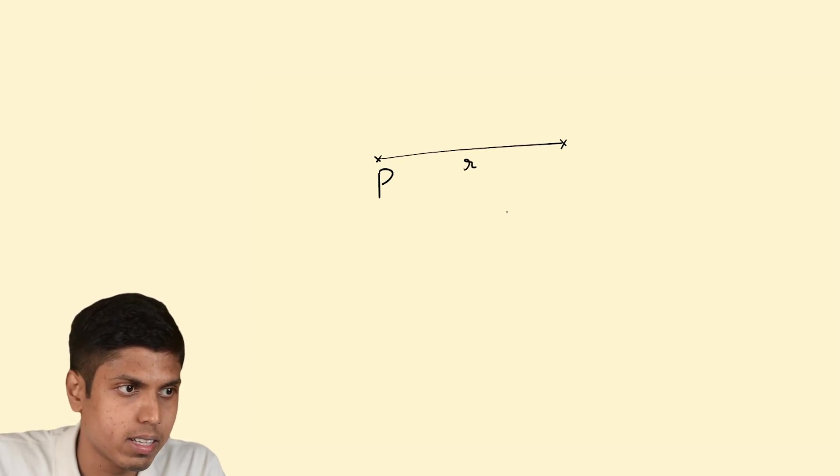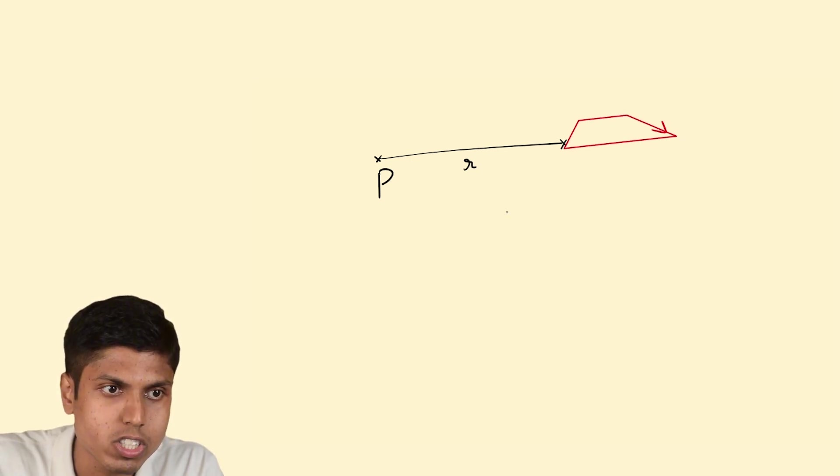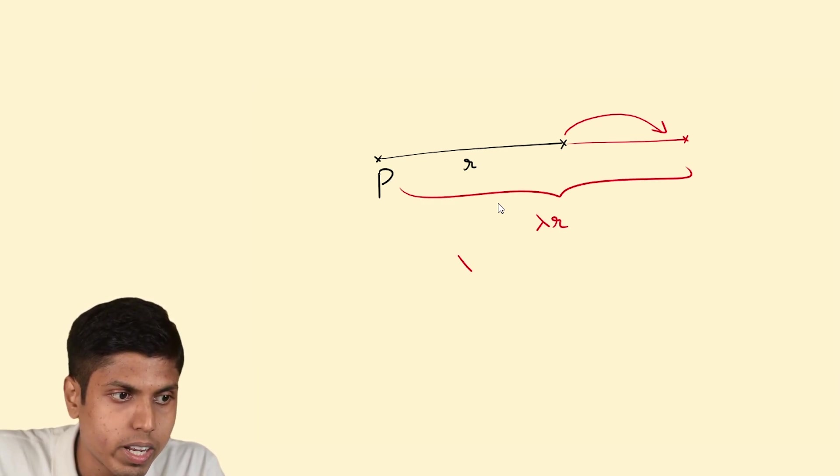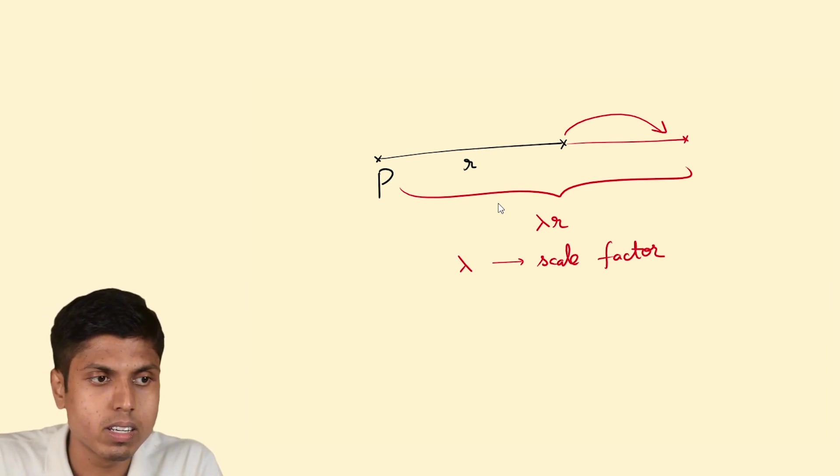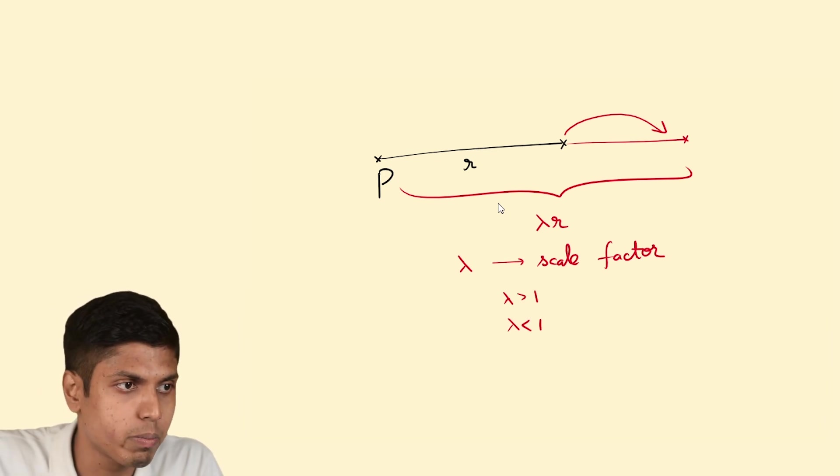Formally defining it, with respect to a particular point P, if a point is at a distance R, then when you try to zoom in, you are shifting the point along the same direction to a distance of lambda R, where lambda is the scale factor. Hence, for zoom in, you will have lambda greater than one, and for zoom out, you will have lambda less than one because the points would move closer to the center.